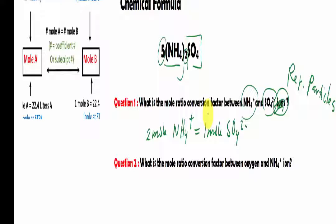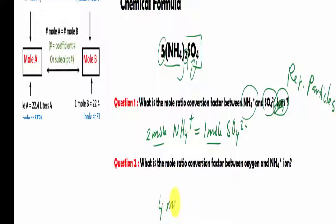In addition to specific elements, we can also look at ions, using the unit mole to quantify. For the next question: what is the mole ratio conversion factor between oxygen and ammonium ion? Oxygen appears four times in the formula, so we have four moles of oxygen equal to how many moles of ammonium ion. We have two, so it is two moles of NH₄⁺.